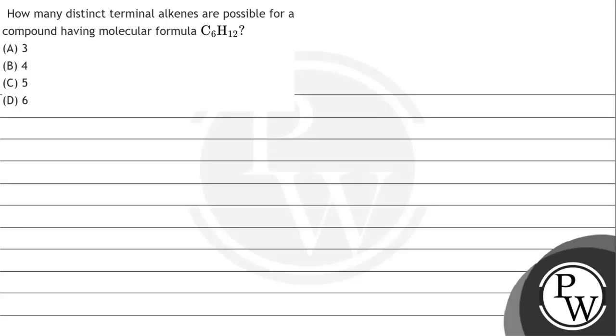Hello, let's read the question. How many distinct terminal alkenes are possible for a compound having molecular formula C6H12?